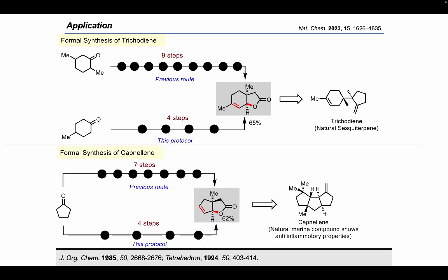Here's another example: capnulin, which is a marine natural compound, also requires the intermediacy of a 5-5-fused lactone. We could form this from cyclopentanone in just four steps, whereas previously the synthesis of this 5-5-fused lactone required seven steps. Thus, our method can be utilized in a number of natural product syntheses to improve step economy.